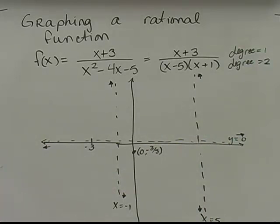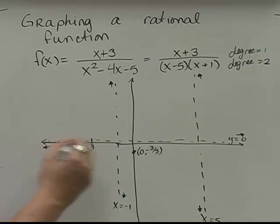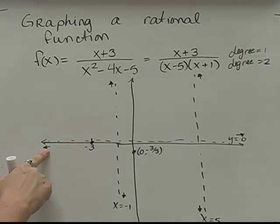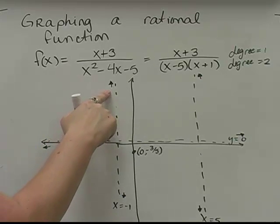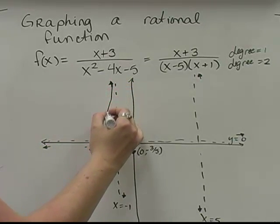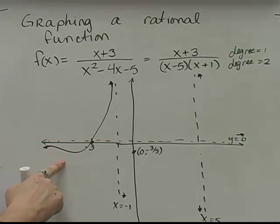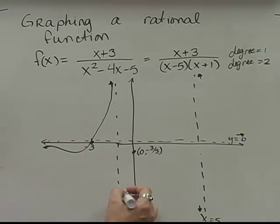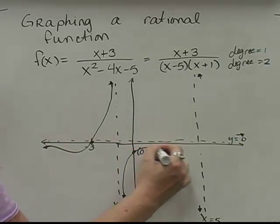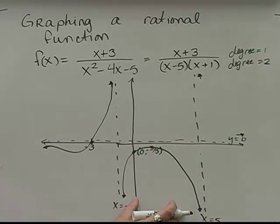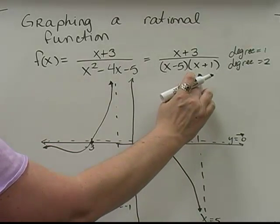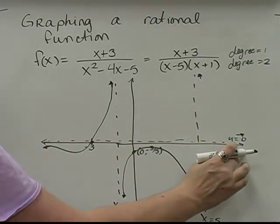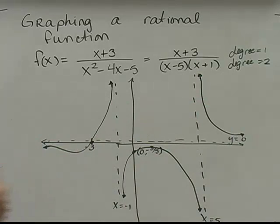Now we bring all this information together. Starting from the left: the graph approaches the asymptote from below and crosses at the x-intercept, so we connect the dots. In the middle section, the graph starts at one asymptote, ends at the other, and crosses at the x-intercept. On the right end, the graph starts at the asymptote and approaches from above without crossing the x-axis. We have now successfully graphed a rational function.